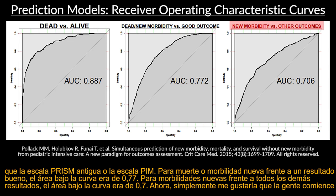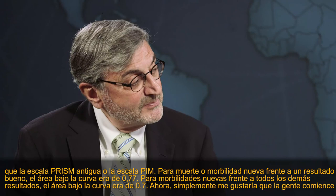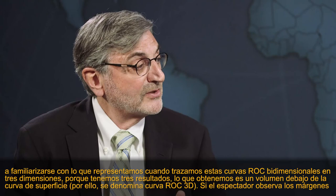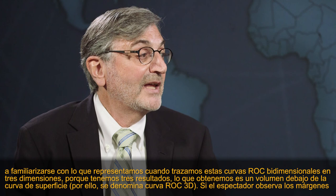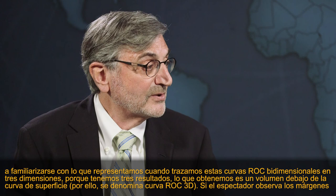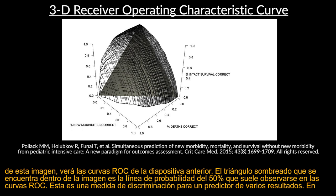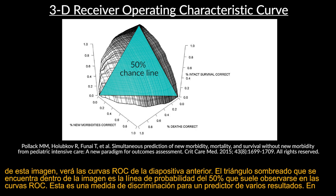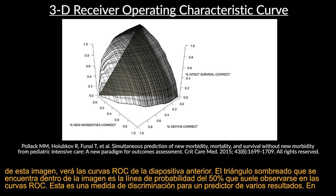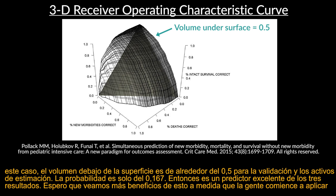We also looked at the receiver operating characteristic curves. For dead or alive, the area under the curve was 0.89 for hospital outcomes — about the same as the old PRISM or PIM score. For death or new morbidity versus a good outcome, the AUC was 0.77. For new morbidities versus all other outcomes, the AUC was 0.70. When plotting in three dimensions for three outcomes, we get a volume under surface curves — the so-called 3D ROC curve. The volume under the surface was about 0.5 for both the validation and estimation sets, compared to chance at only 0.167 — making it an excellent predictor of the three outcomes.